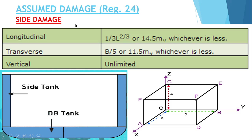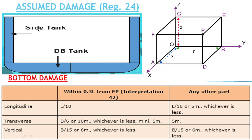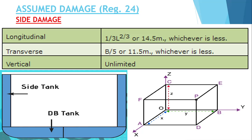In assumed damage, two damages are taken into consideration: one is the side damage and one is the bottom damage. As per assumed damage, the side damage is considered in three directions — longitudinal, transverse, and vertical. These three dimensions are taken whenever we talk about damages, whether it is side damage or bottom damage.